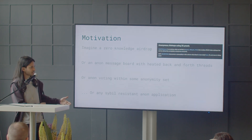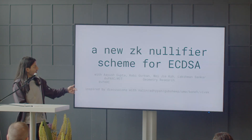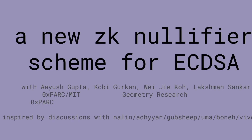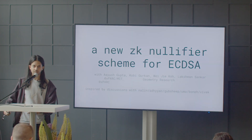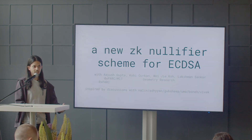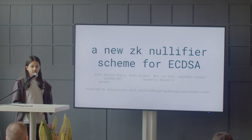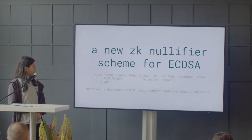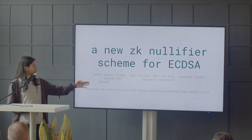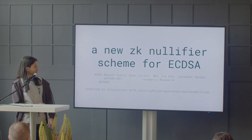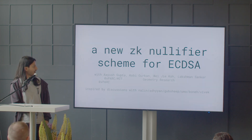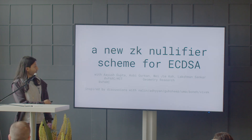After a bunch of discussion about how to do this, we decided that the best way forward was a new ZK nullifier scheme for ECDSA. The idea is that we achieve unique pseudonymity by creating a new signature scheme that's very easy to put in a ZK-SNARK that allows you to verify that you are, in fact, a unique account. The work was done with Kobe, Wei-Jay, Lakshman from Xerox PARC and MIT, along with a ton of input from some other folks.